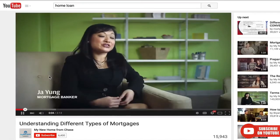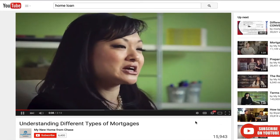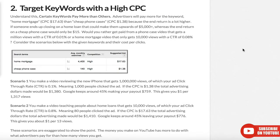Or you make a video about teaching people about home loans that gets 10,000 views, and your ad click-through rate is 0.8% — a little higher, a little more targeted. Let's say 80 people clicked on the ad. If your cost per click is $17.60, the total advertising dollars would be $1,410. Google keeps 45%, leaving you $776. That gives you $1 for every 13 views — a lot higher — which would be close to $77 per thousand views. So you have to remember: YouTube does not pay you for views. YouTube pays you to bring people who will click on their ads, and then they'll pay you a part of that.